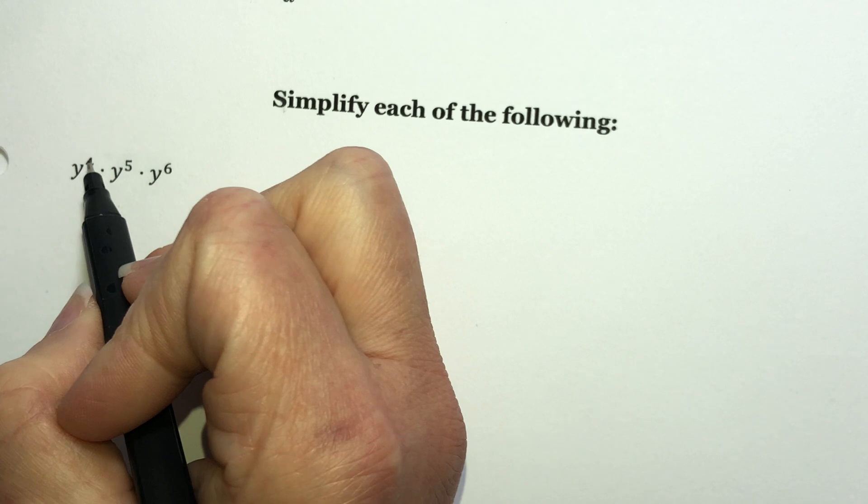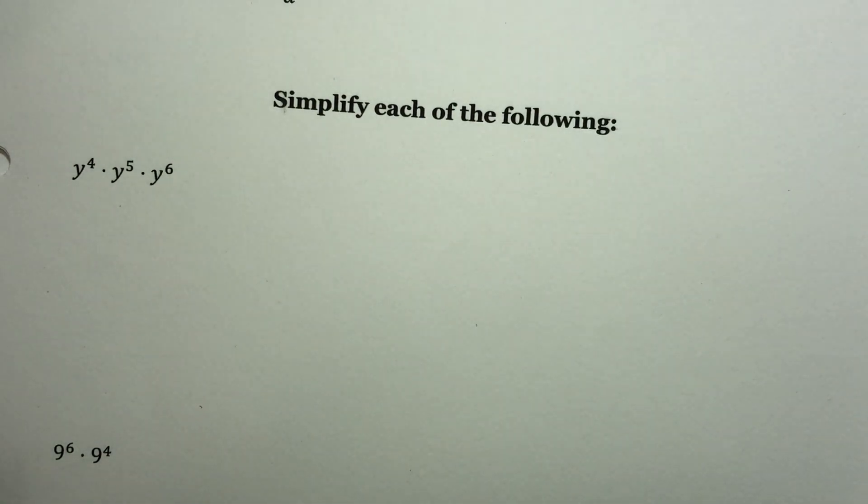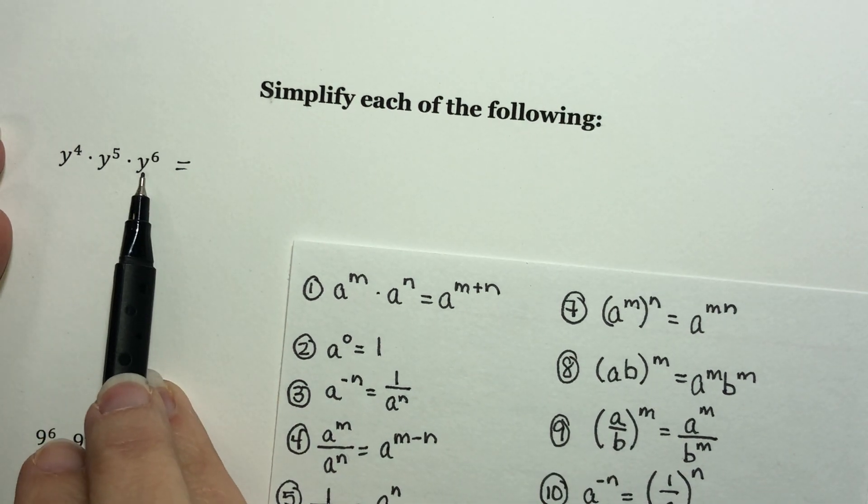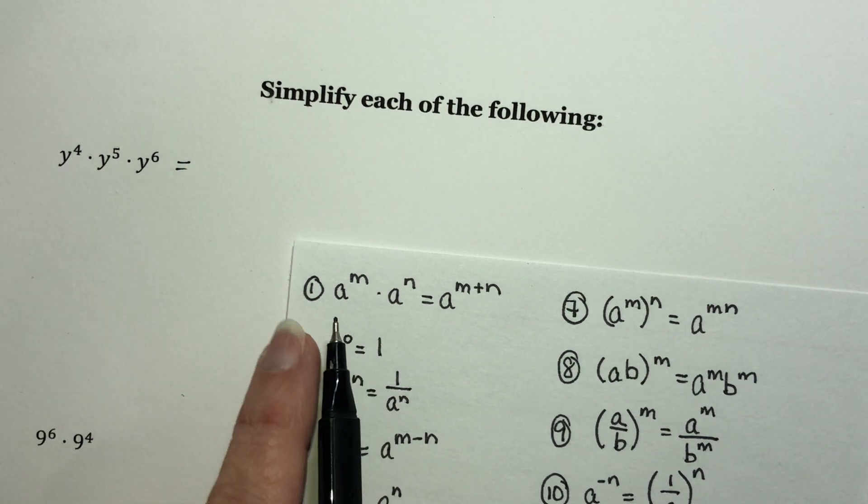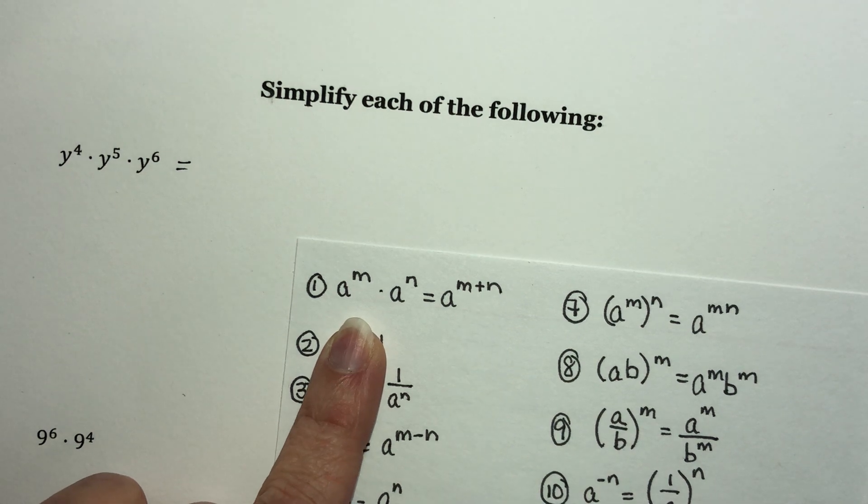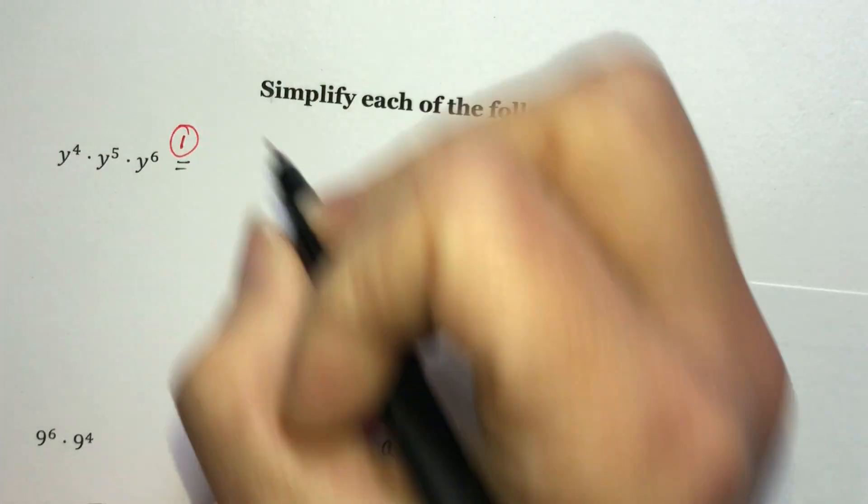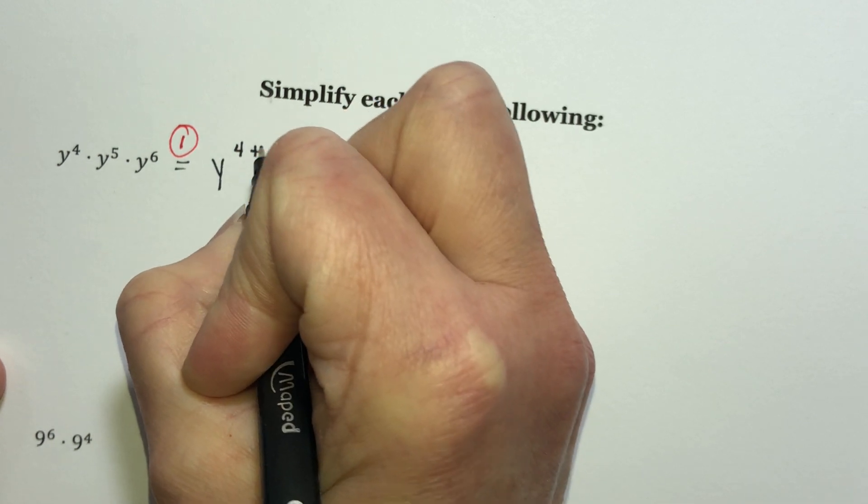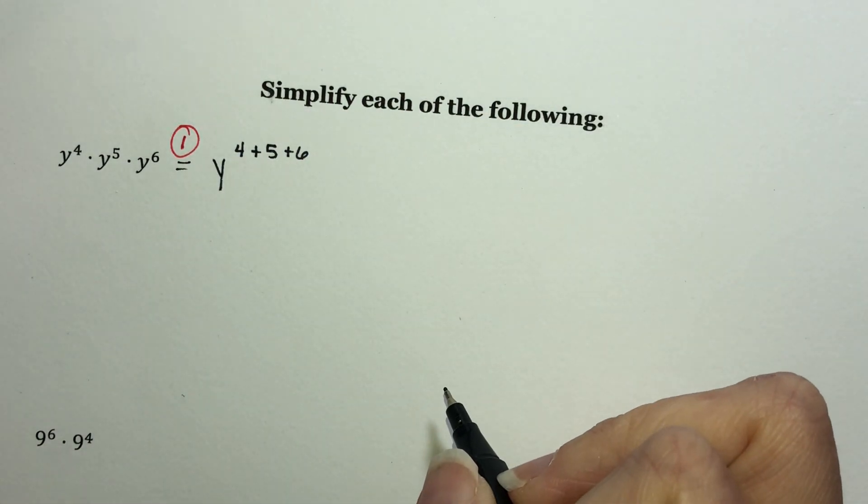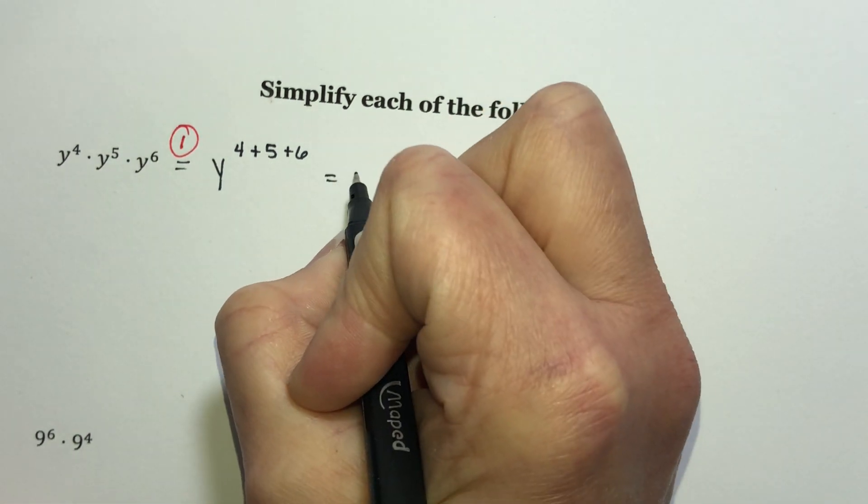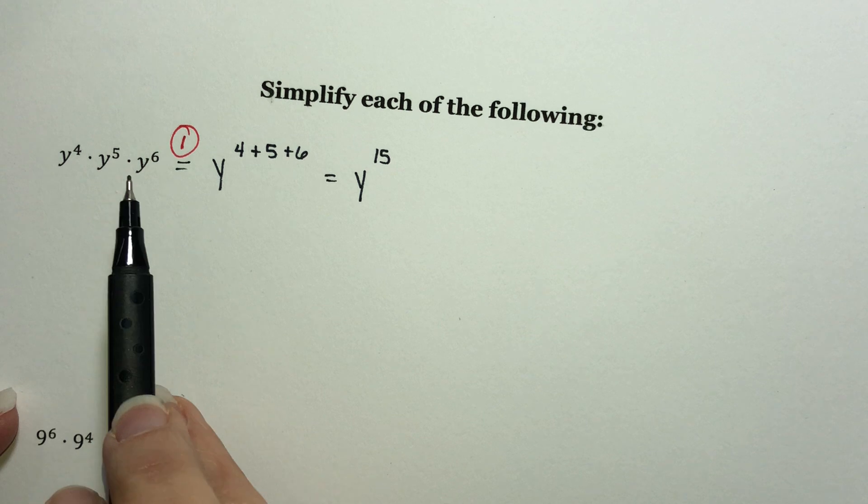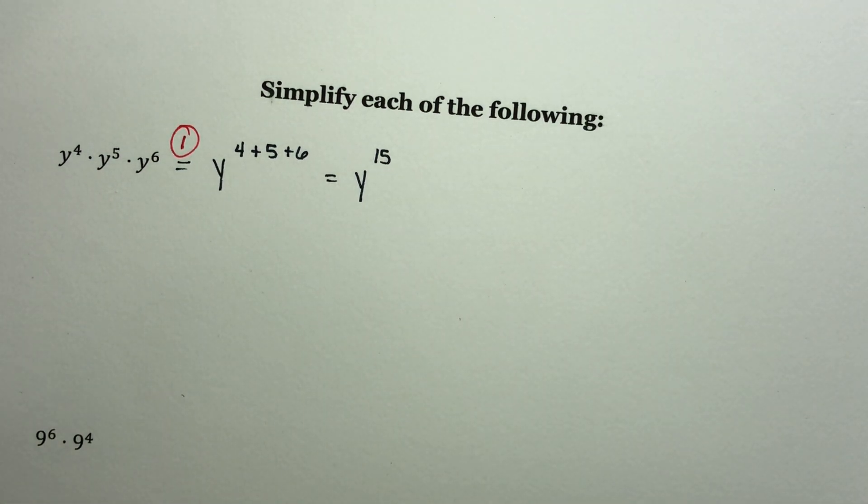So let's just start with some examples. I want to multiply y to the fourth times y to the fifth times y to the sixth. Now I'm going to identify the steps by the property number. What I have is I'm multiplying all these things together and they all have the same base. When you multiply things together that have the same base, you get to add their exponents. So I'm using property one right here. And I'm going to write out every step because you want that in your notes. This is equal to y to the four plus five plus six. And then when you add those, you get y to the fifteenth power. Now you could have written this out four times and then this one five and then this one six and counted, you would have had 15.